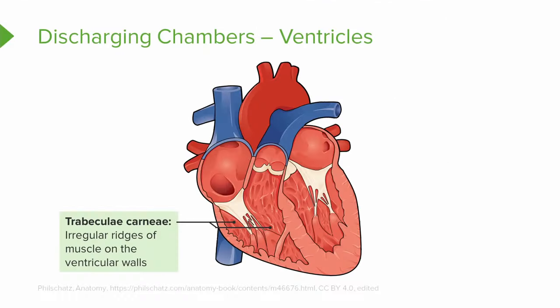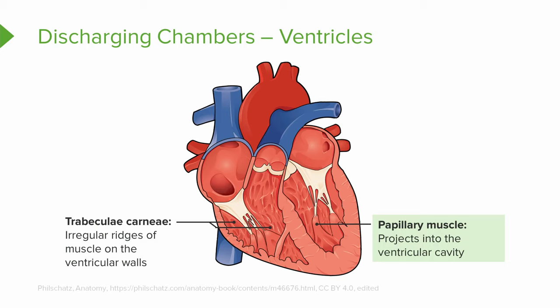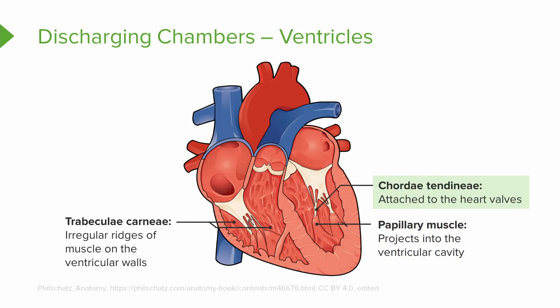Within the ventricles, we have structures known as the trabeculae carneae, which are irregular ridges of muscle on the ventricular walls. We also have the papillary muscles, which project into the ventricular cavity and are anchored by little cords known as chordae tendineae. These are attached to the heart's valves.